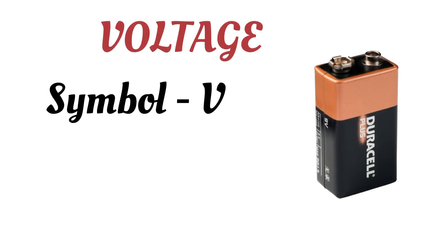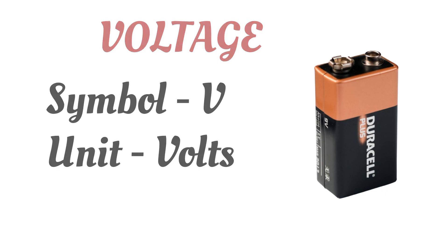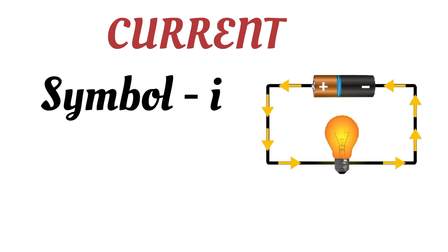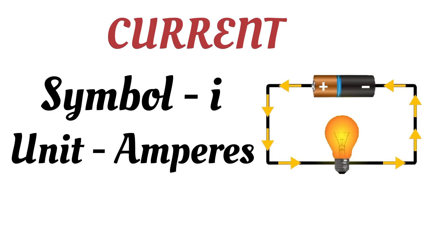Voltage is represented by the symbol V and its unit is volts, but current is represented by the symbol I and its unit is amperes.